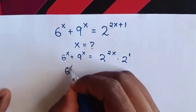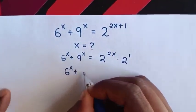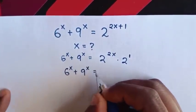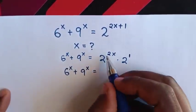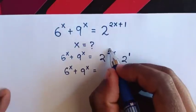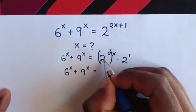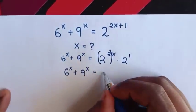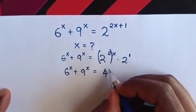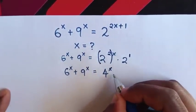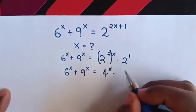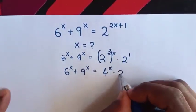It will be 6 power of x plus 9 power of x is equal to 2 power of 2, so we apply brackets. So 2 power of 2 is 4 power of x, times 2 power of 1 is 2.